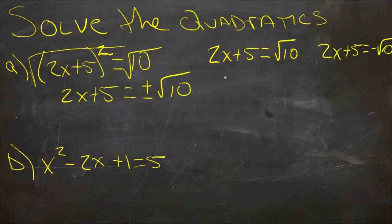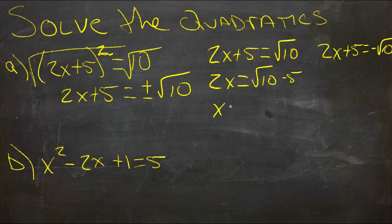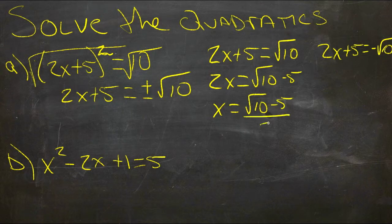Here we'll subtract 5 from both sides. We'll have 2x equals root 10 minus 5, and then divide everything by 2, and we get x equals root 10 minus 5, the whole package, divided by 2.